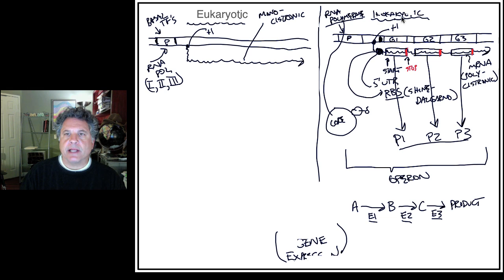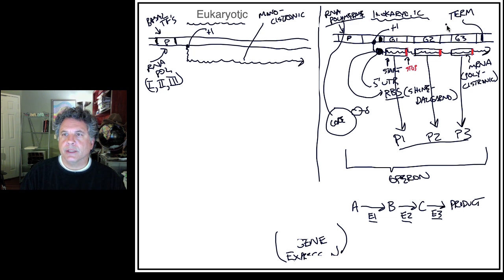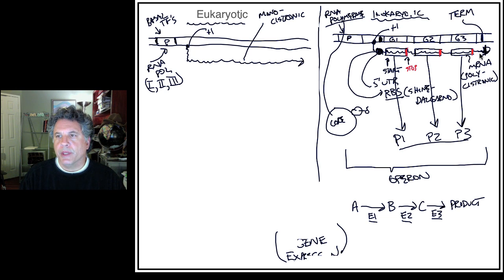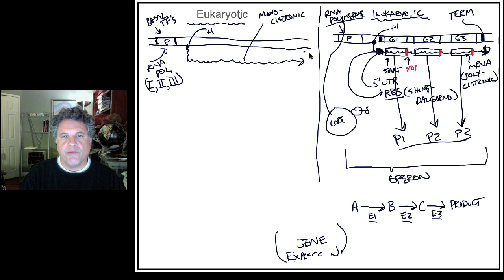In prokaryotic gene expression, the DNA contains a defined sequence which signals the termination of transcription — a transcription termination site at which transcription ends through formation of a hairpin loop in the messenger RNA, dictated by the sequence of nucleotides in the DNA. In eukaryotes there is no well-defined termination site; the polymerase transcribes and eventually falls off the template DNA, releasing the messenger RNA.